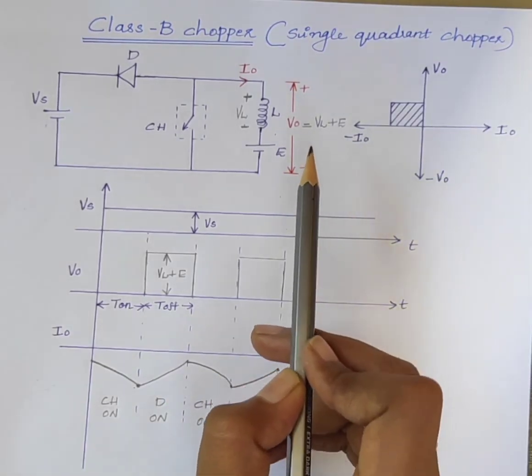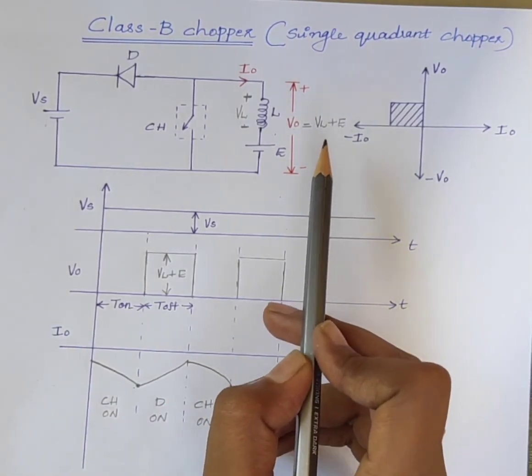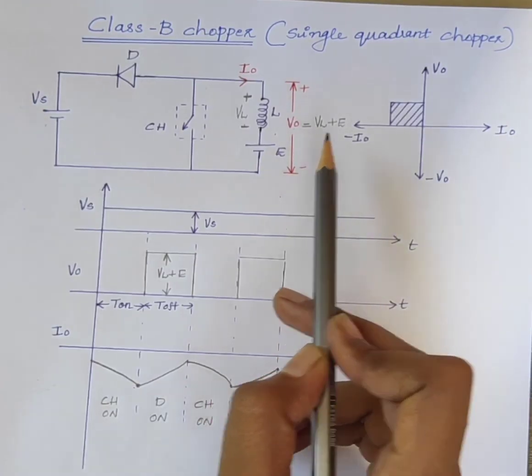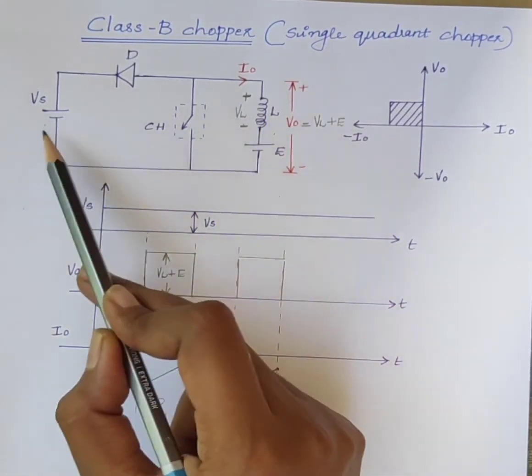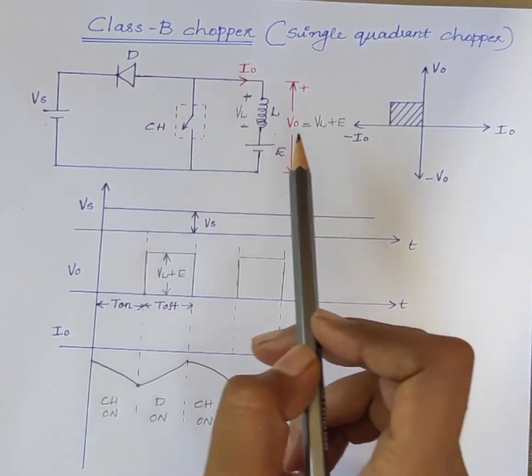The output power is negative. Negative output power means the load feeds the source. Thank you.